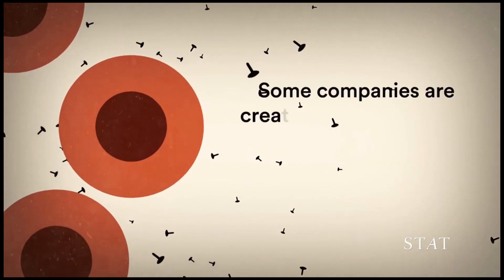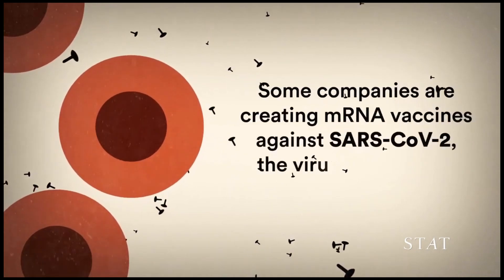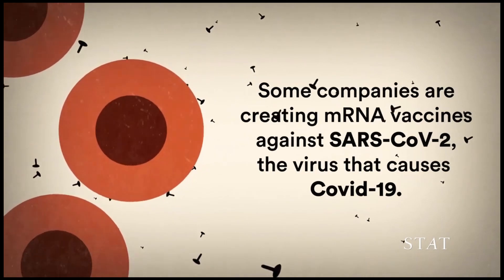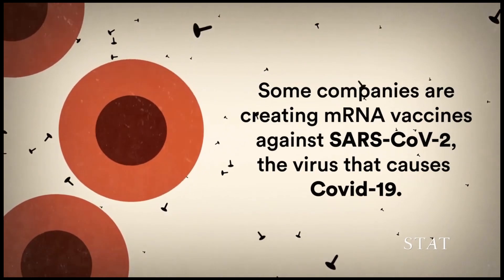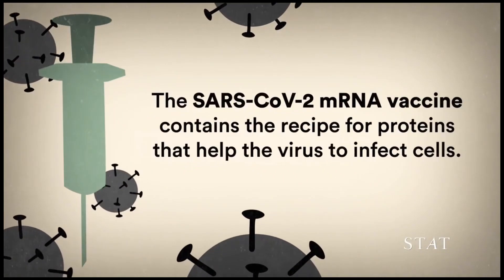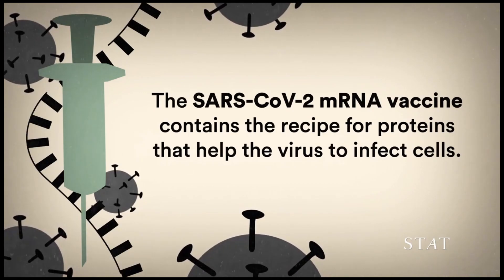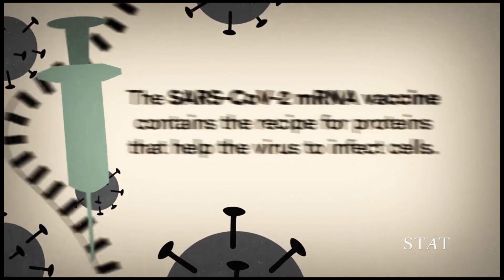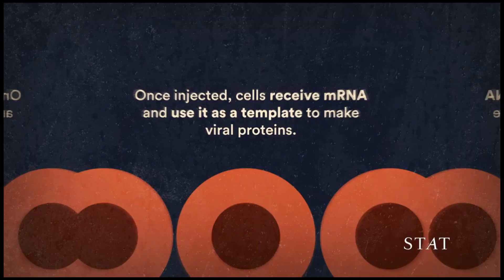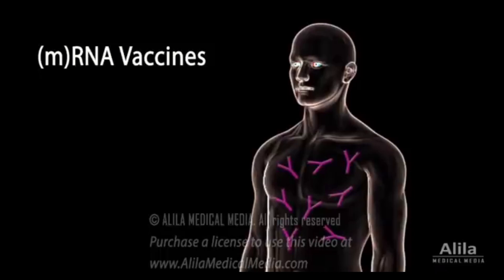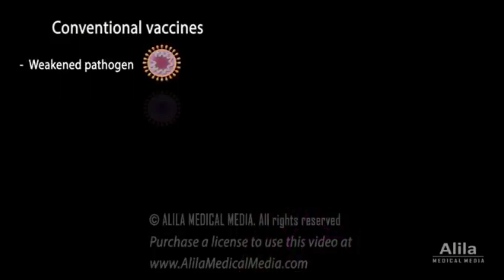They use a placebo-controlled, observer-blinded, dose-escalation phase one trial. It's expected to enroll, well they already enrolled 100 healthy volunteers age 18 to 55 without any history of symptomatic genital herpes infections. The study consists of first dose escalation that will focus on the safety evaluations and they want to assess the optimal dose response in various dose levels.